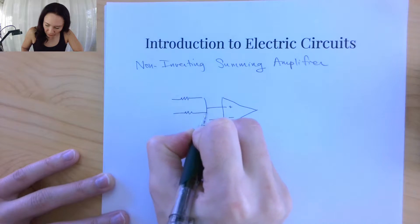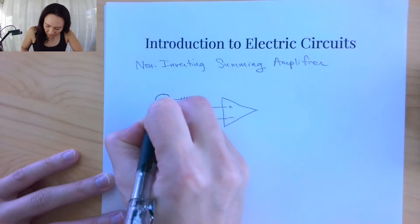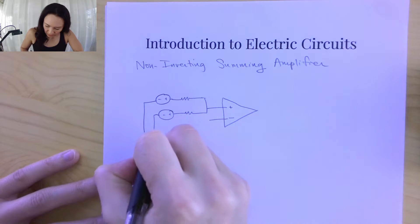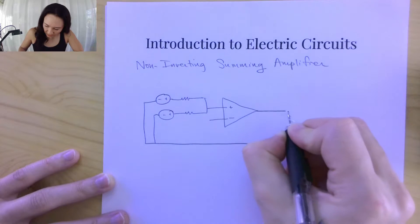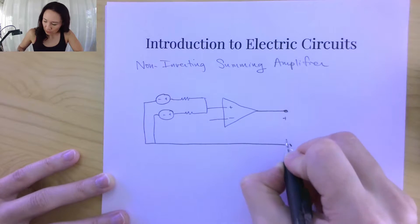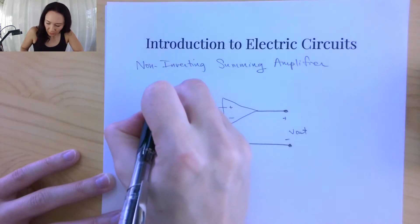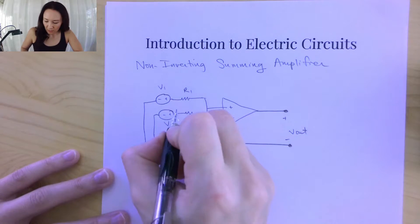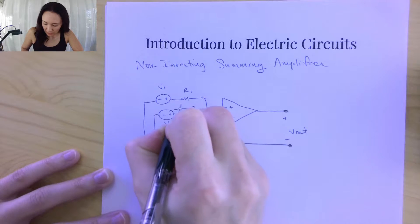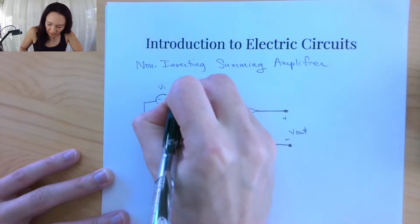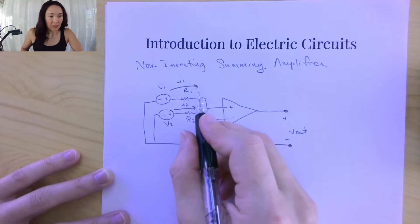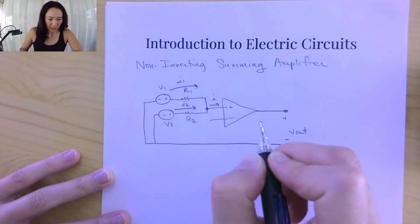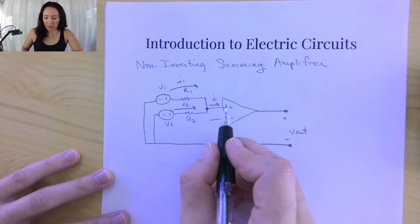Just for an example, let's suppose we have two voltage sources. I'll tie both of these to ground down here on the bottom, and extend out our ground line so that we can connect two terminals here to measure V out. So if this is V1 and R1, and this is V2 and R2, then the current originating from this source going this way is I1, and the current from this source going this way is I2. These currents meet at this node, combine, and then the result — I'll just call it I — goes into this non-inverting input to the op-amp.